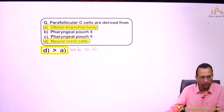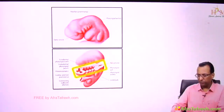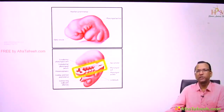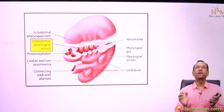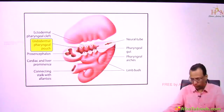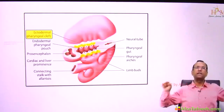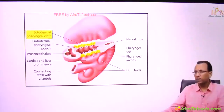Take a coronal section of the developing pharynx to look at its lateral wall. On the inside you see pouch 1, 2, 3, 4 — lined by endoderm. On the outside you see cleft 1, 2, 3, 4 — because they are outside, they are lined by ectoderm, but still on the lateral wall of the pharynx.